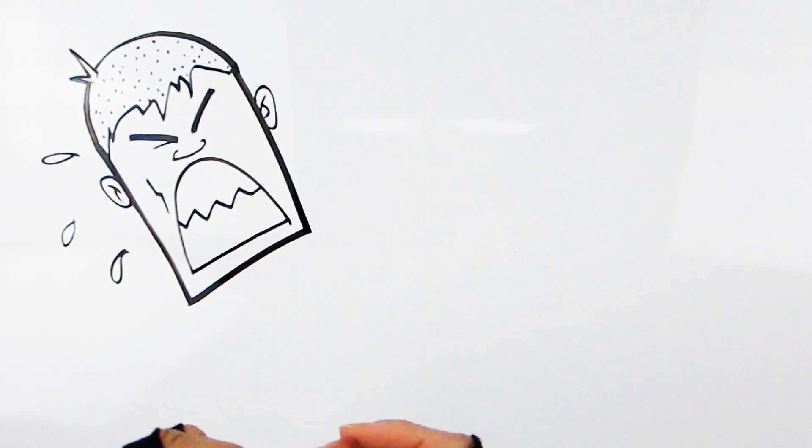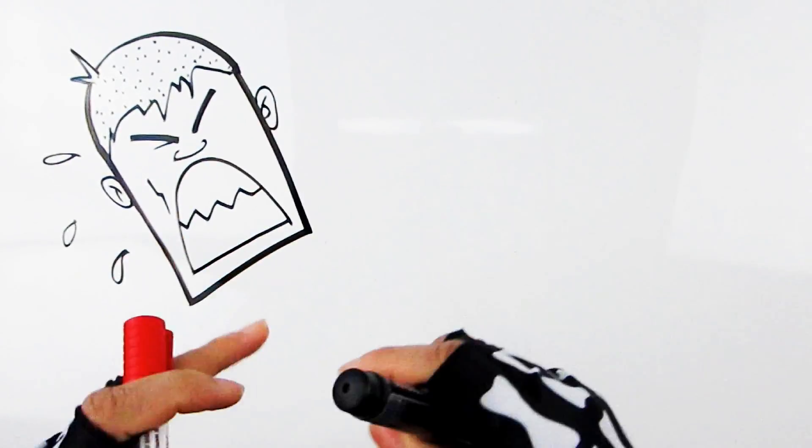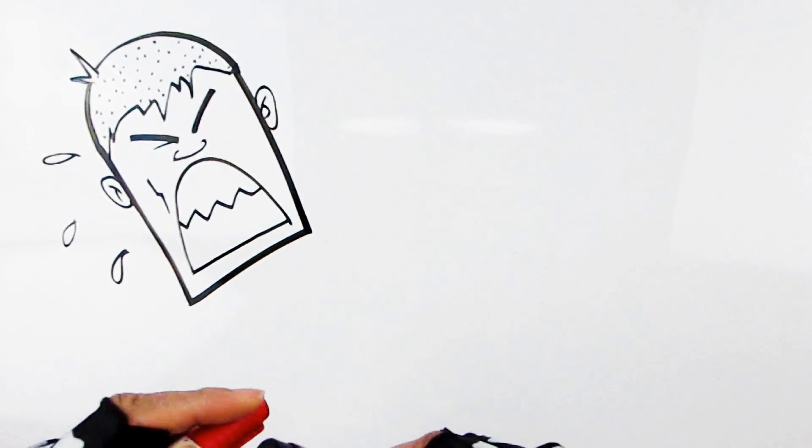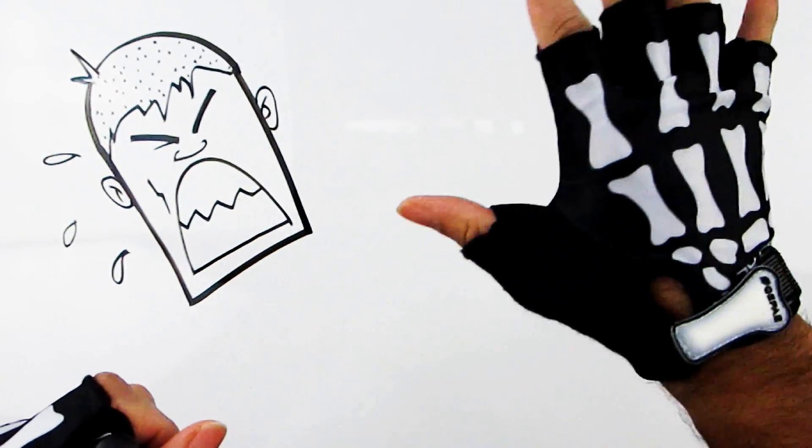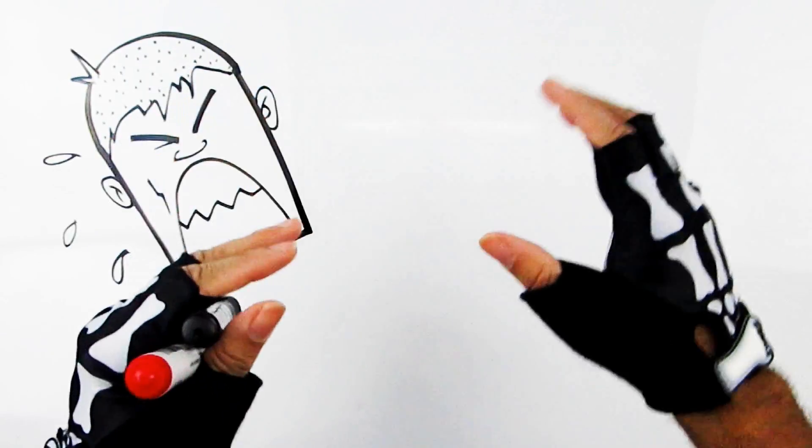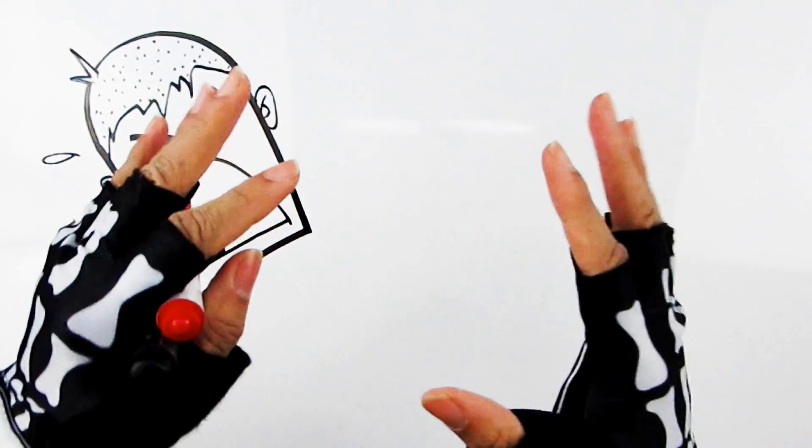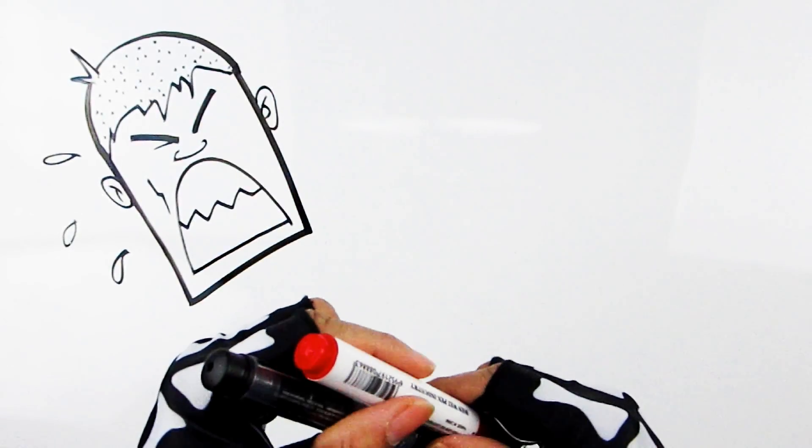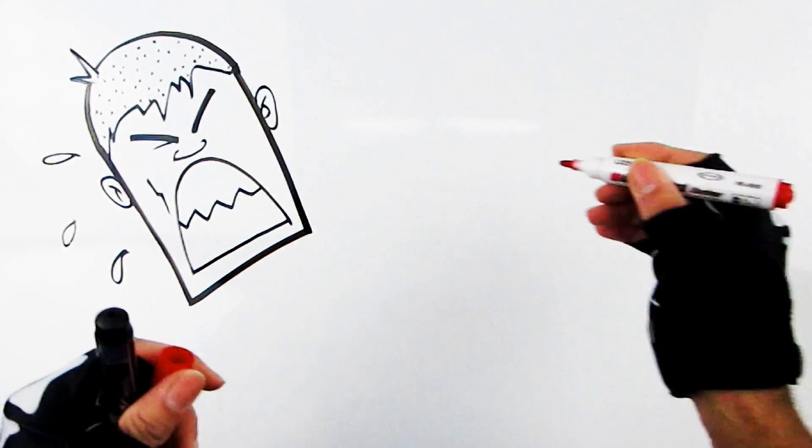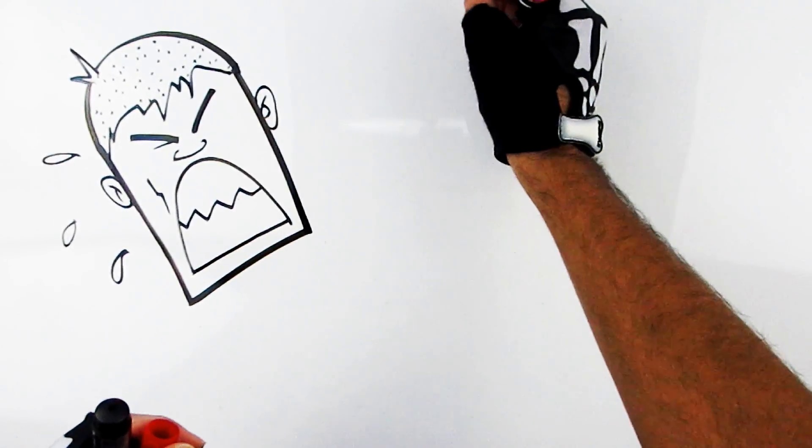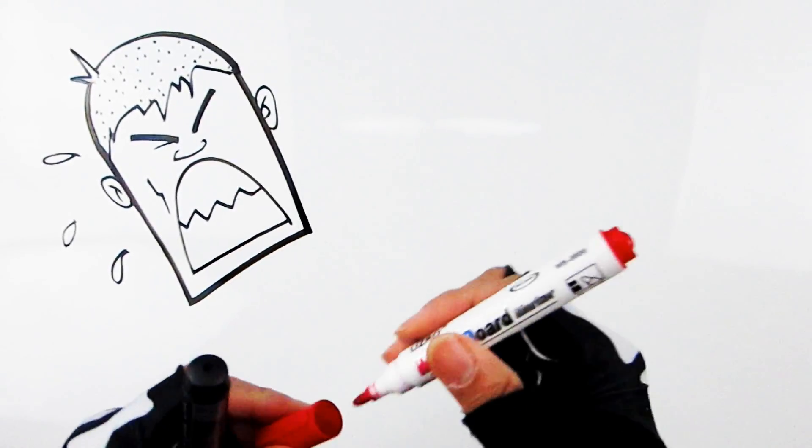First off, what exactly is trigeminal neuralgia? Well, that's kind of like explaining what an elephant is when you're blind. So we're going to feel a few different parts, and as we feel the different parts you'll start to become familiar with it. First off, it is a chronic condition. When you have it, it's going to last for greater than three months.